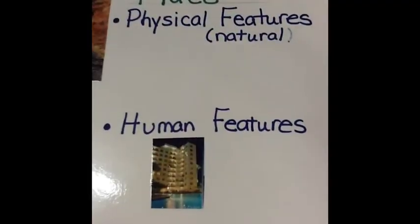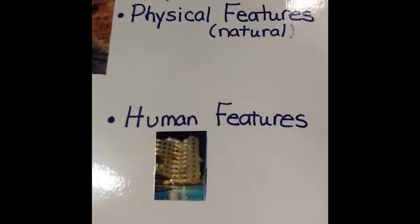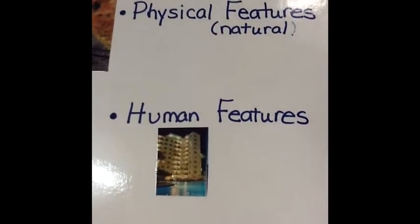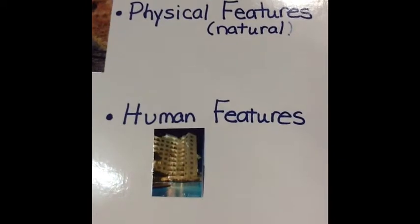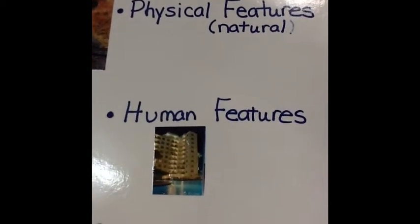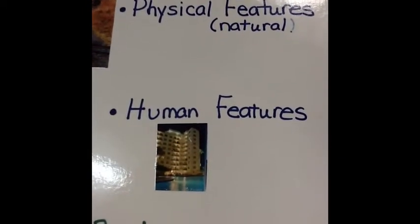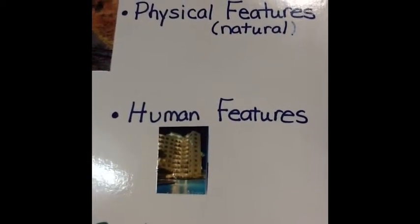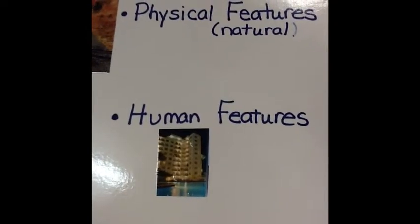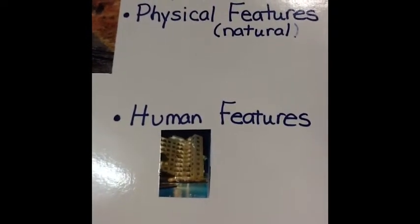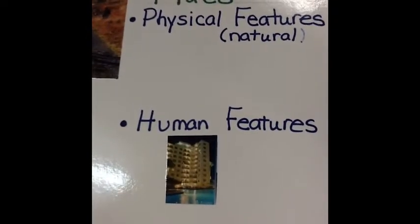Place is one of the five themes of geography. An example of a place would be a building.